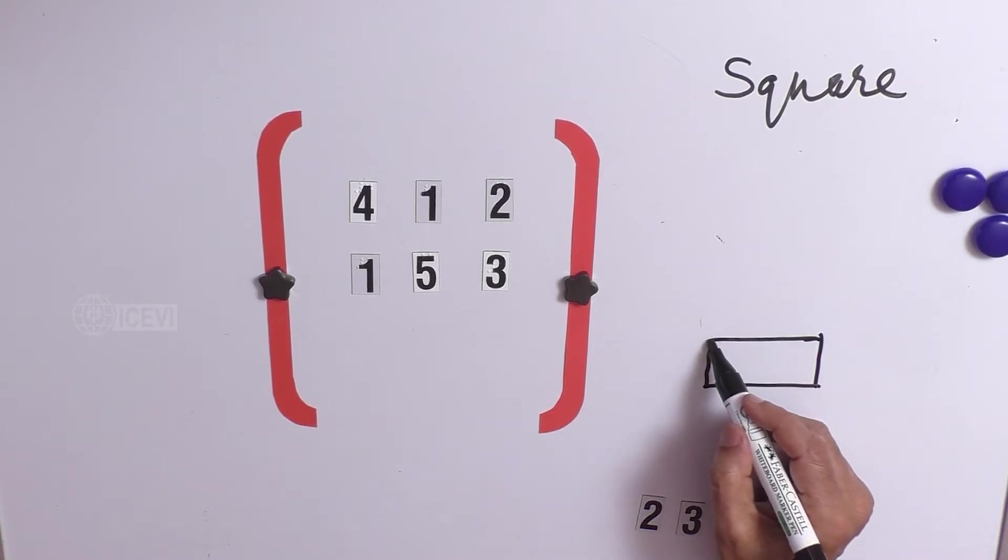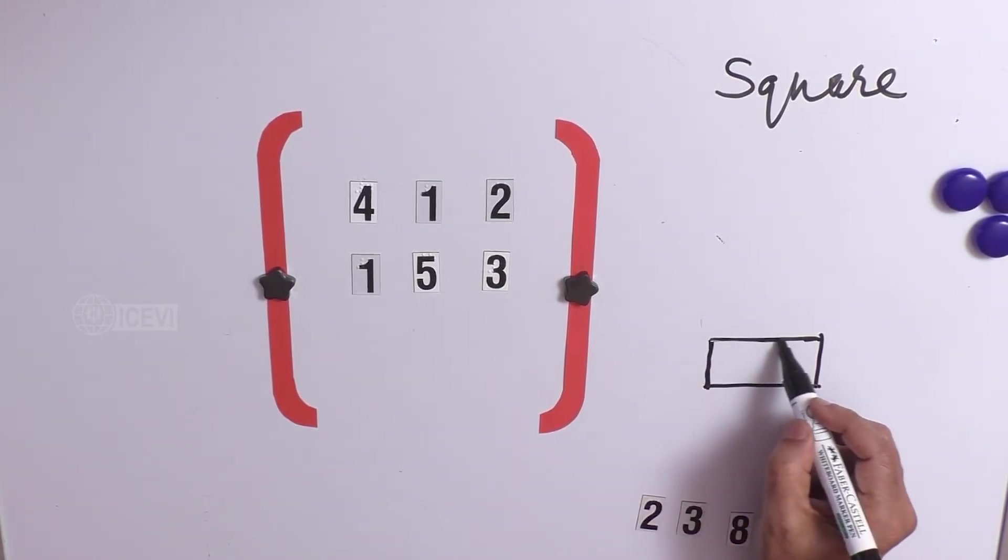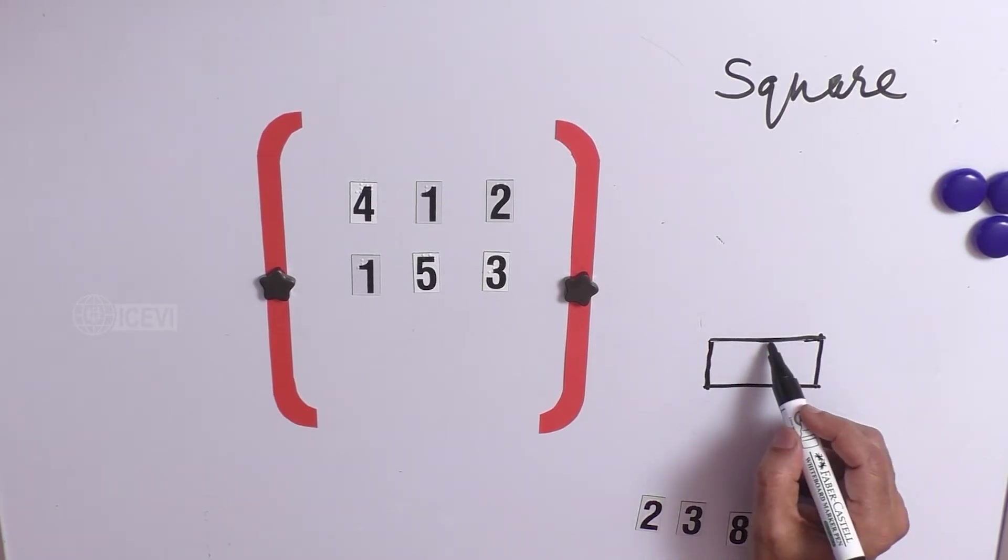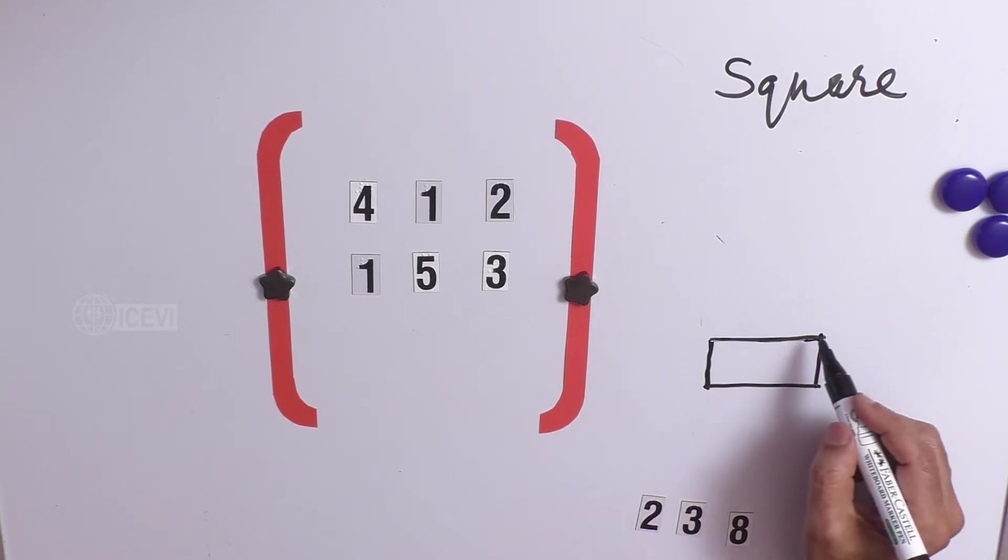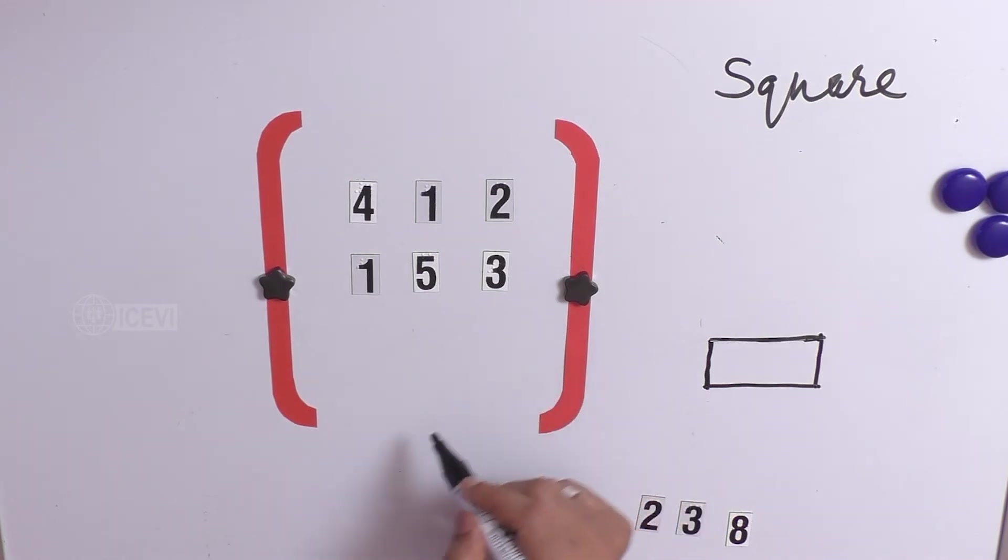Rectangle means, one side is longer than the other side. If we take one side as the length, and if we take the row as the length, and column as the width, then we can notice that row length is longer than the column length. That means, it looks like a rectangle.